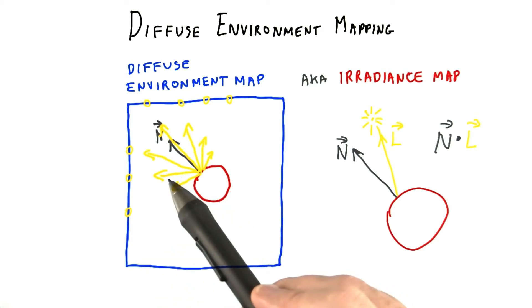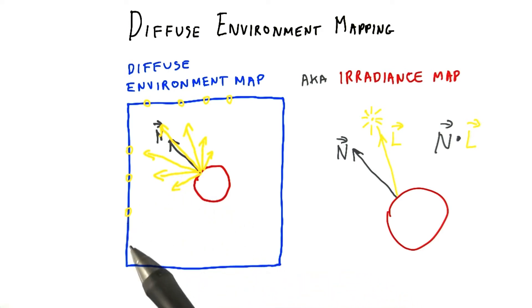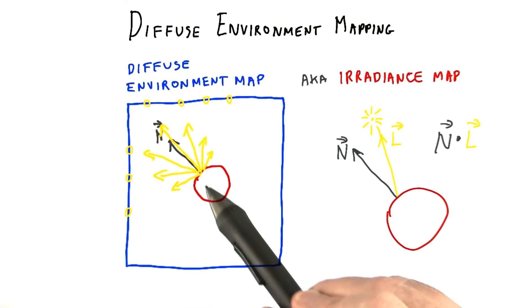Take the dot product of the direction vector to each texel from the surface and compute the dot product with the surface normal. Add these all up. You now have the contribution of the entire environment map on a single location.